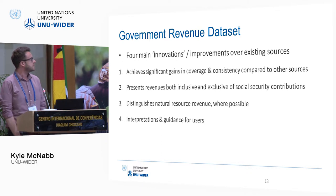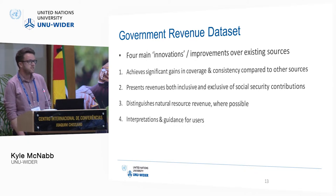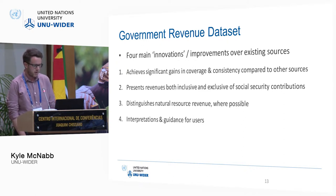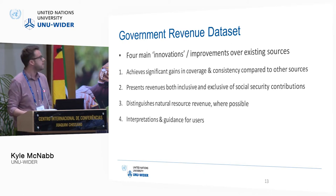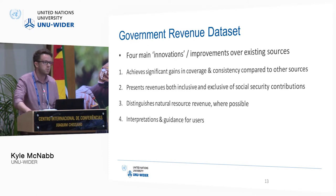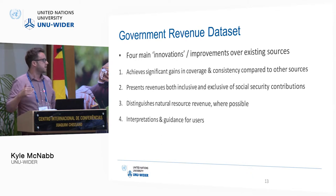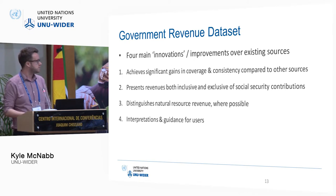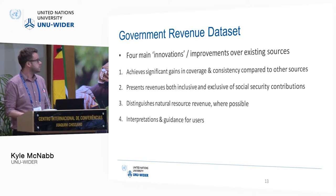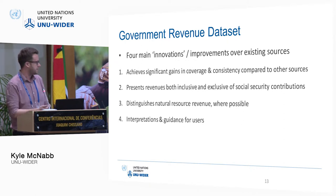Compared to existing underlying data sources, I've identified four main innovations or improvements that we're able to make. First, we can achieve significant gains in coverage and consistency compared to other sources. Second, we can present revenues both inclusive and exclusive of social security contributions — a point more relevant for OECD or high-income countries, since a lot of developing countries don't collect or report social security contributions, but it's important to bear in mind for cross-country comparison. Third, where possible, we try to distinguish the part of revenue that comes from natural resources, trying to do that as consistently as possible for the largest number of countries. And fourth, and perhaps most importantly, we provide notes and extensive interpretations of the data and try to guide users so that they employ it in a more responsible manner.